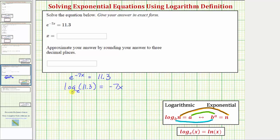Let's go ahead and replace log base e with natural log. So our equation is natural log 11.3 equals negative seven x.